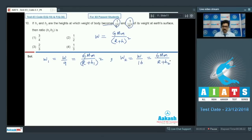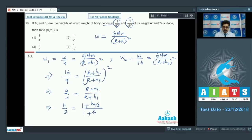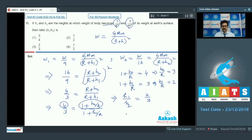Dividing these two equations, 16 upon 9 equals r plus h2 upon r plus h1 whole squared. Taking square root, 4 by 3 equals r plus h2 upon r plus h1. This gives 4 by 3 equals 1 plus h2 upon r divided by 1 plus h1 upon r. Dividing numerator and denominator by r, taking numerator as 4 and denominator as 3, we get h2 by r equals 3 and h1 by r equals 2. Taking the ratio, h1 by h2 equals 2 by 3. Correct option is option number 3.